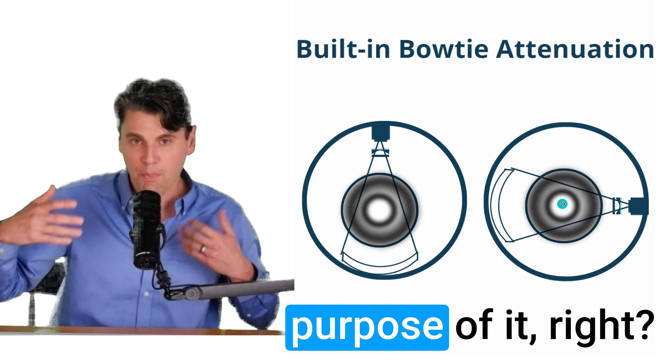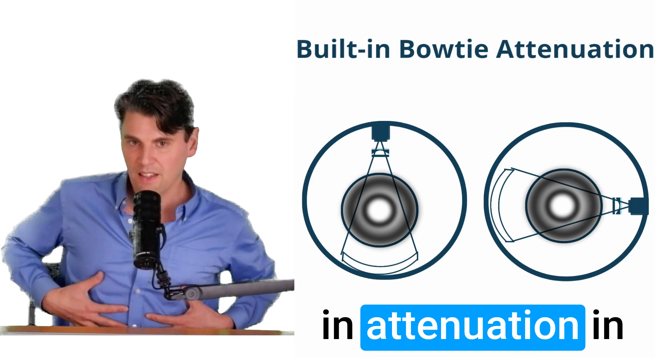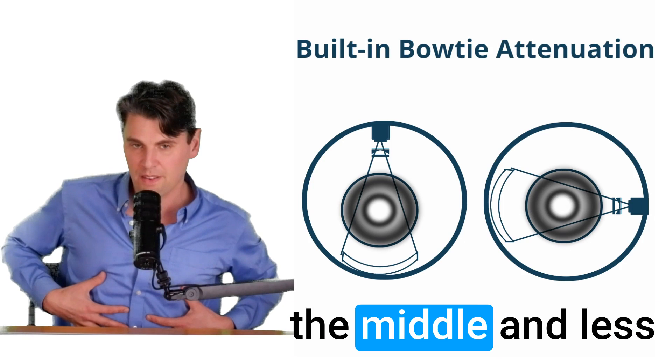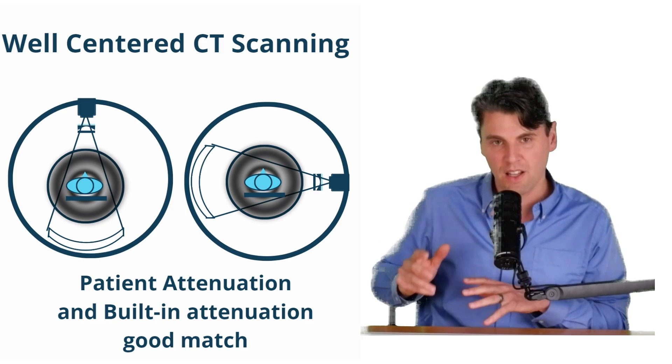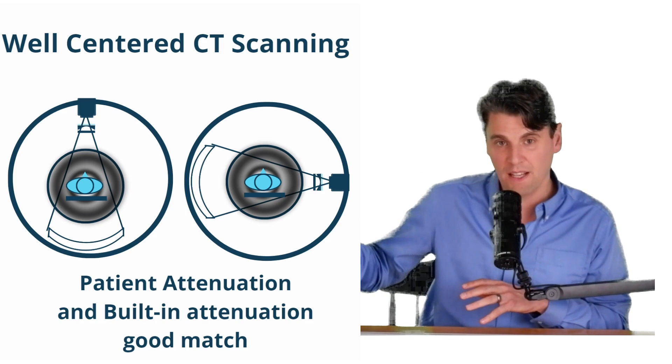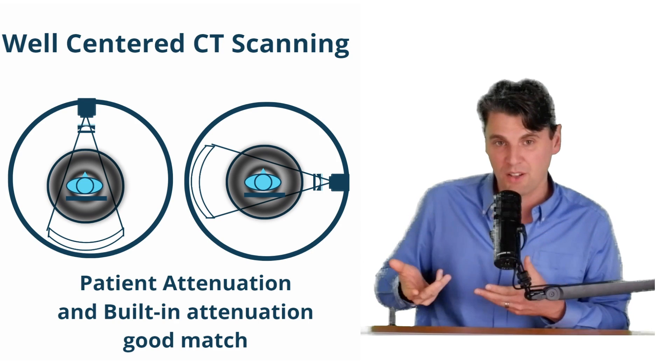So there's more built-in attenuation within our imaging volume out towards the outside and less built-in attenuation in the middle. And that's the purpose of it, right? Because we know there's more built-in attenuation in our patient that's going to be towards the middle and less towards the outside. What we want to do is actually get a relatively good match for our built-in attenuation once our patient attenuation. So you can see when we have our patient well-centered, you're going to have a good match for the patient attenuation versus the built-in attenuation.